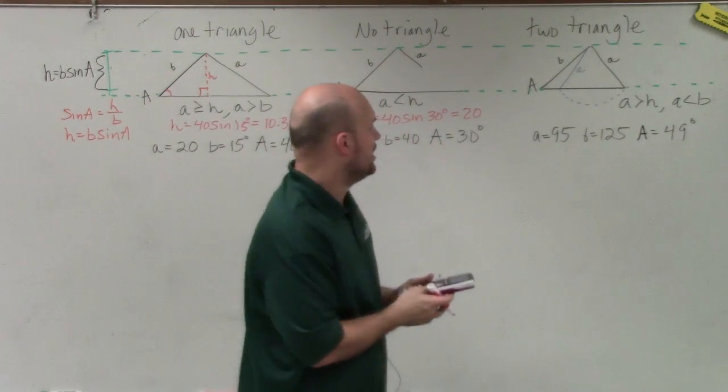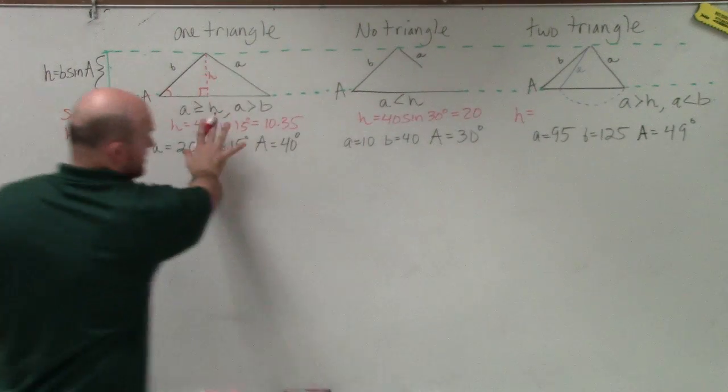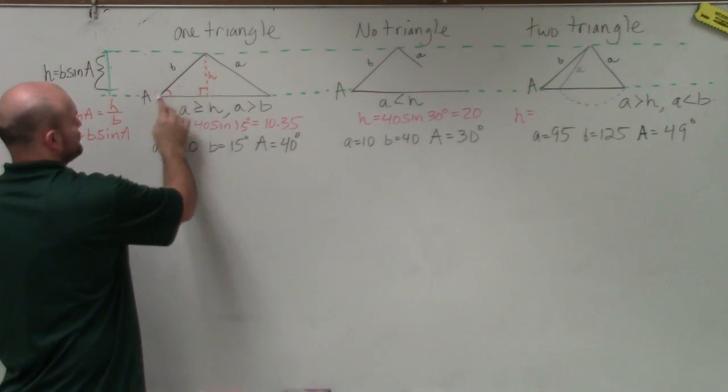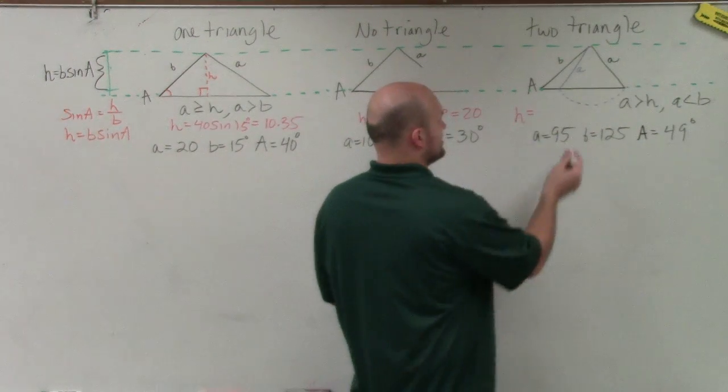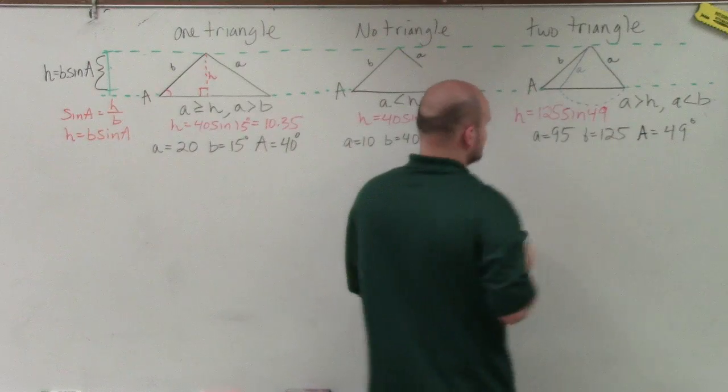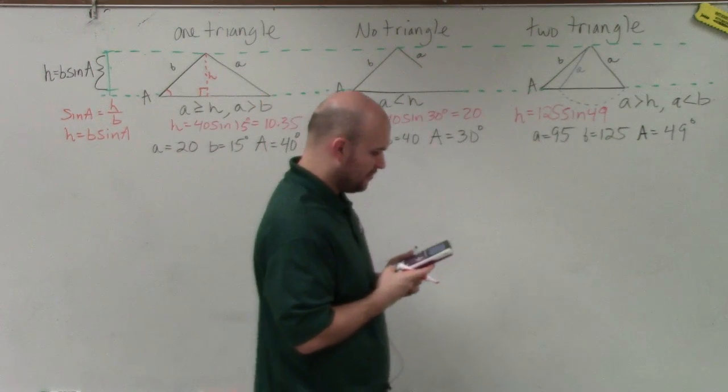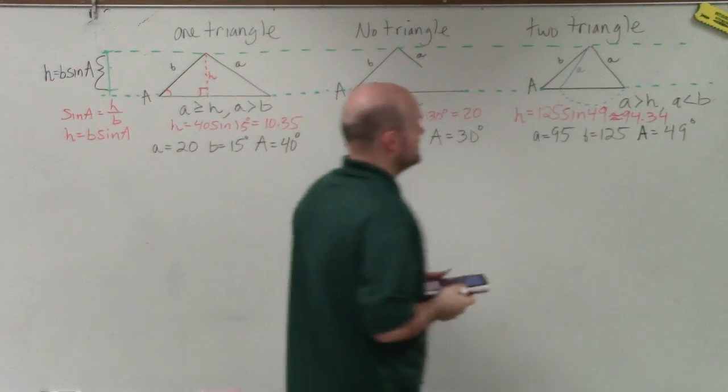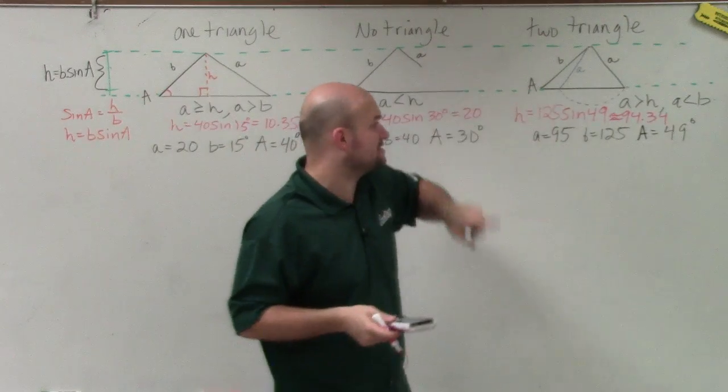And then over here, all I simply do for my H here is it needs to be greater than, it needs to be less than my A, like in my first example. But instead of it being greater than B, and then A is greater than B. So my A is greater than B. Here, you can see that my A is less than my B. So therefore, I'll take B. So it'd be 125 times the sine of 49. And that gives me 94.34. And you can see that my value, my H, is going to be less than my A. So therefore, this produces two triangles.